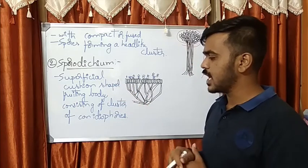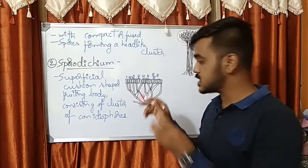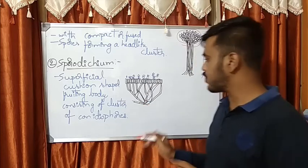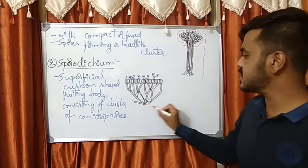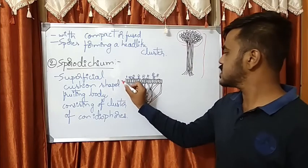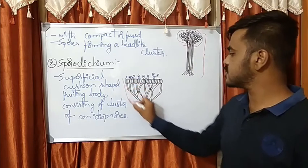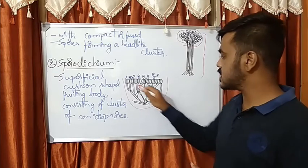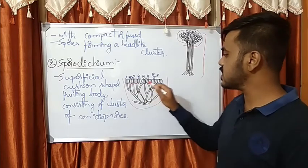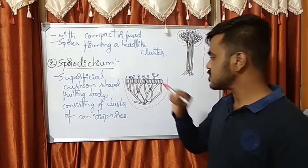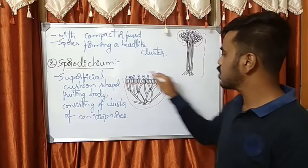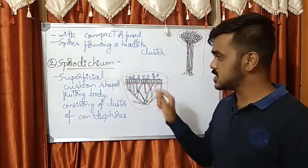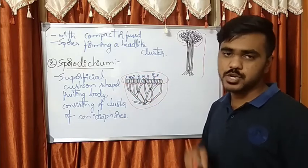The sporodochium is a superficial, cushion-shaped fruiting body consisting of a cluster of conidiophores. As you can see in the image, it is a cushion-shaped superficial fruiting body having a cluster of conidiophores. This is the sporodochium.